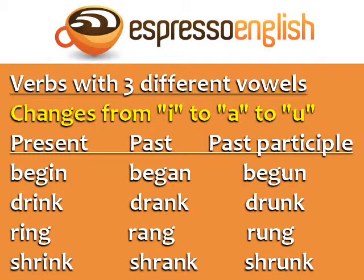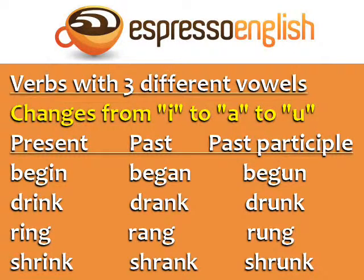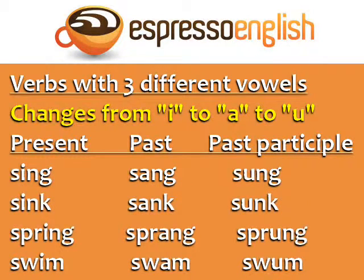Verbs with three different vowels: in this group, the vowel changes from I to A to U. Begin, began, begun. Drink, drank, drunk. Ring, rang, rung. Shrink, shrank, shrunk. Sing, sang, sung. Sink, sank, sunk. Spring, sprang, sprung. Swim, swam, swum.